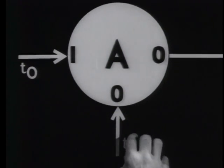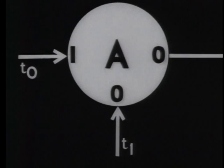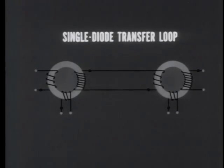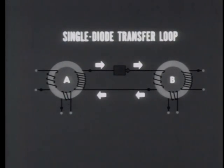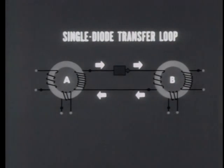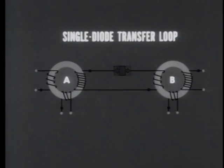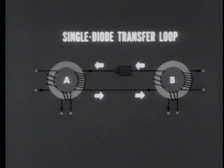And at time T1, we transferred that binary one to core B. The selective isolation of core A from core B was achieved by placing a unidirectional device — the diode that gives this loop its name — in the circuit. The diode allowed current to flow in one direction only, into the non-dot side of core B's input. But we can work many variations. For example, we can turn the diode around. Now the situation is reversed — the diode will allow current to flow around the circuit in the opposite direction only.